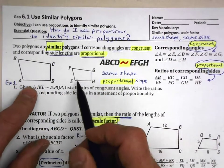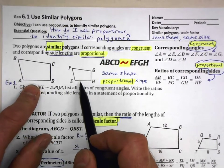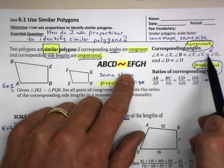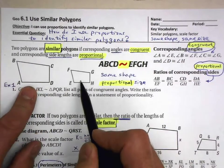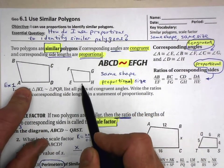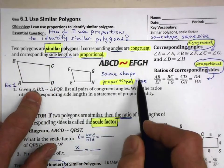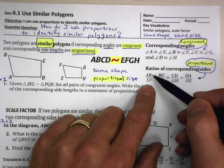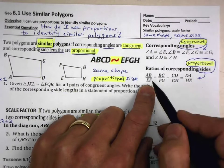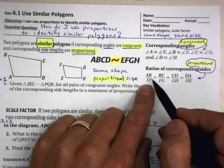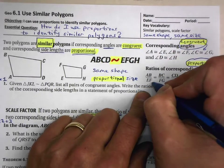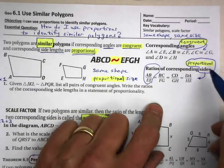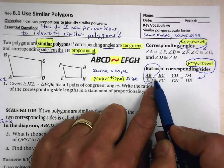These two figures are not congruent obviously, but we are told they are similar. The symbol for similar is just one squiggle, as opposed to congruence which has a squiggle and an equal sign. These two shapes being similar tells us they have the same shape and their size is proportional. A ratio is two numbers related through division, and a proportion is when you set two ratios equal to each other.